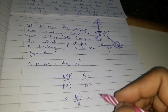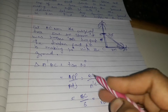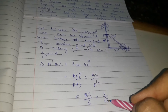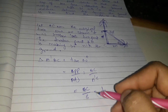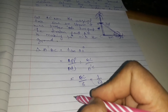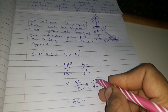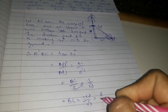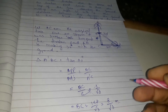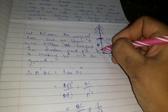So BC by A-dash-C equals tan theta value, which is 1 by root 3. With A-dash-C equal to 8 meters, BC equals 1 times 8 by root 3, which is 8 by root 3 meters.